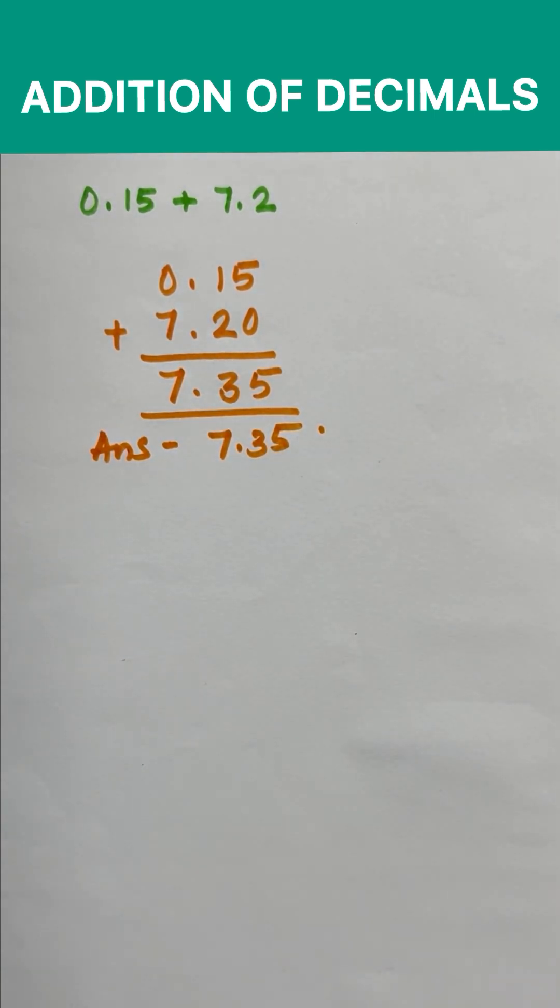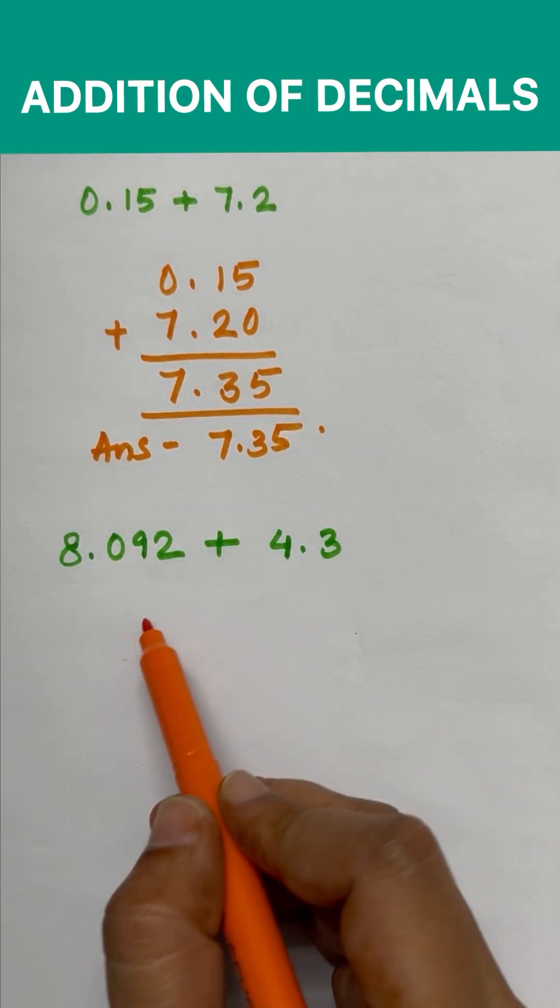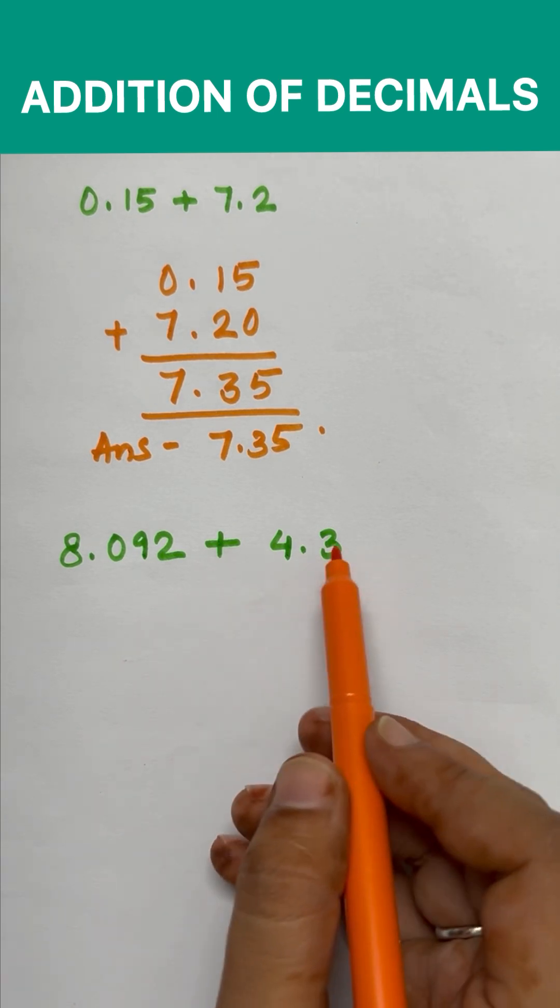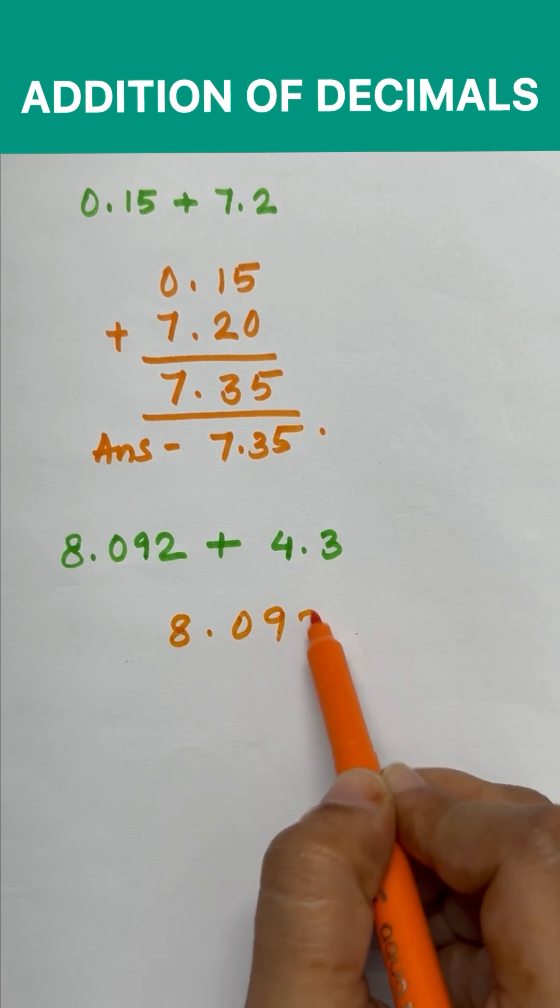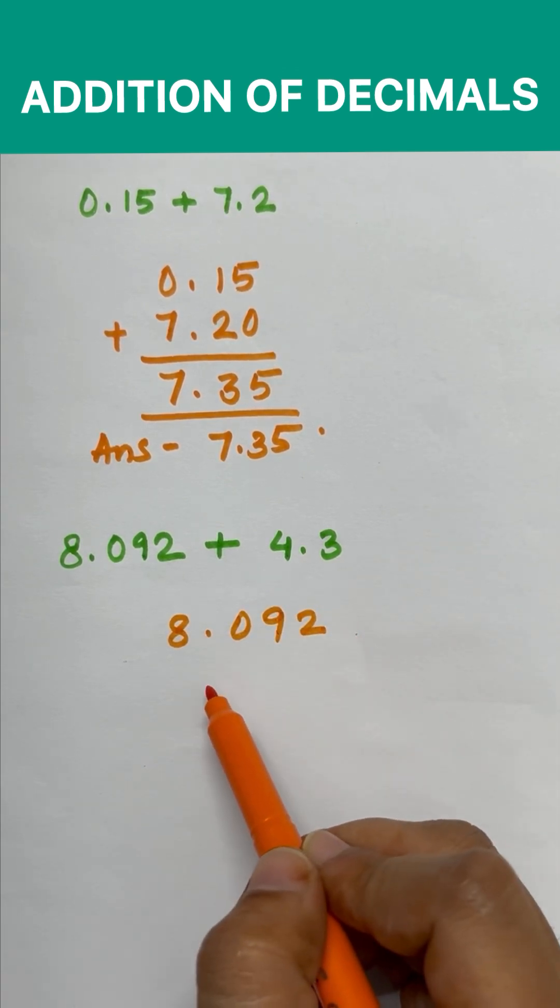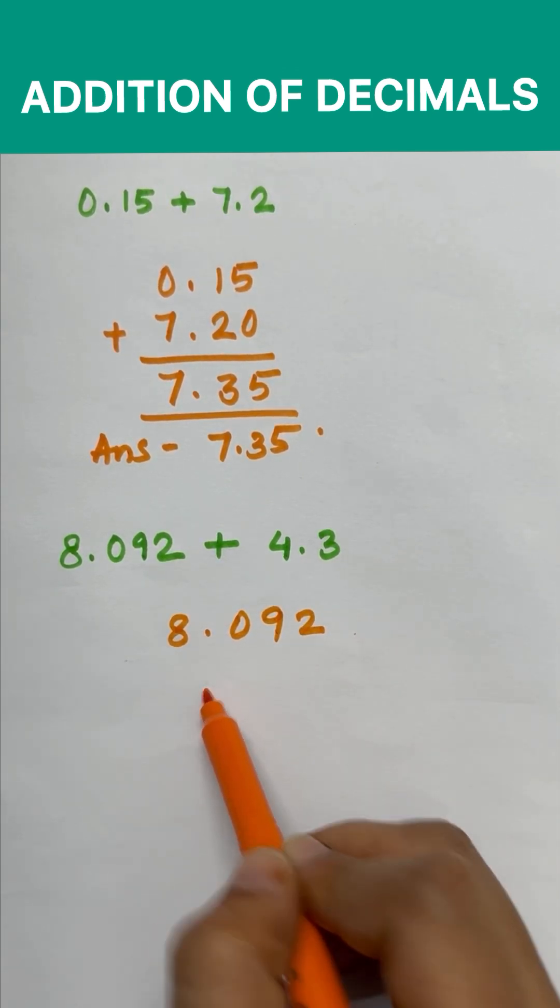Like this we will solve the next question. So the question is 8.092 plus 4.3. So we will write this number first. First we will arrange 8.092. Next we will put a point. That is decimal.